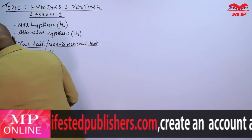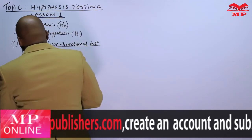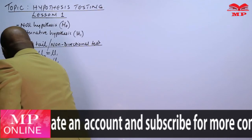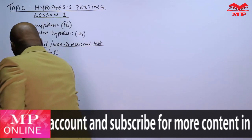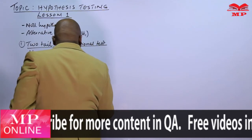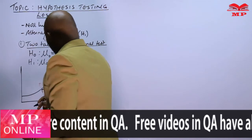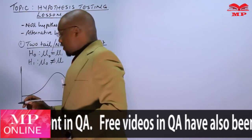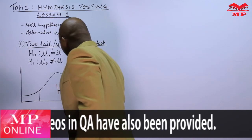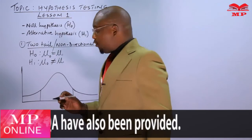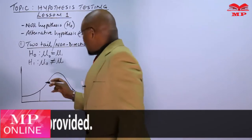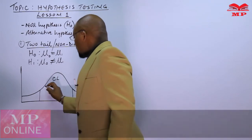Let me draw the distribution. We are going to have our rejection regions on the distribution. This is our null hypothesis supported at the center by the confidence level.